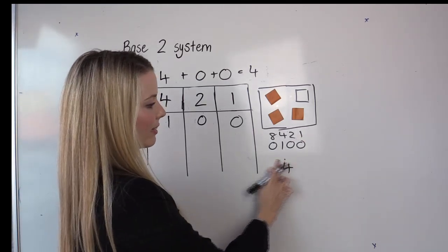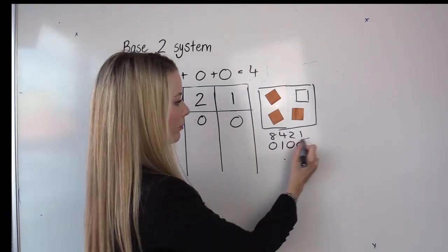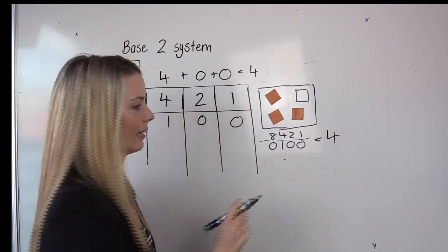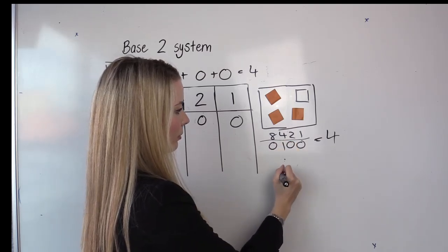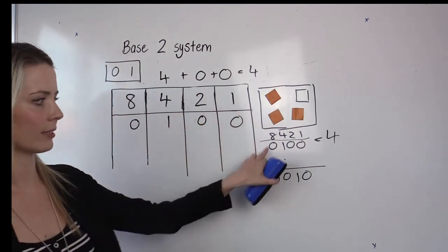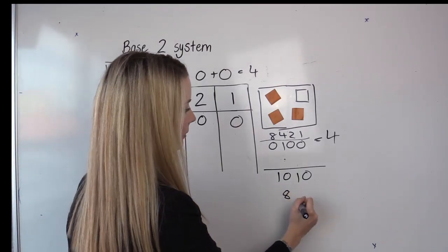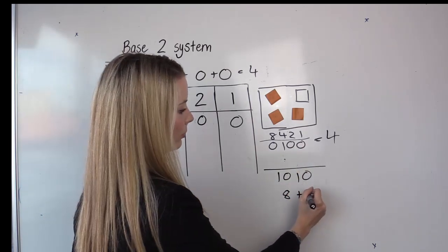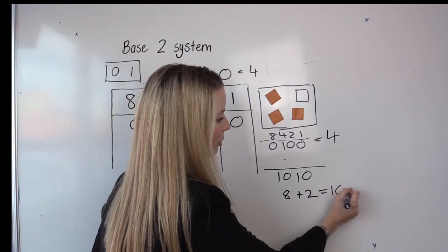And you start to remember when you see these numbers you start to recognize that if there's a one in the fours column then that means four. If someone's given me a number let's say one or one or what's that telling me? It's telling me that I've got one in the eights column so eight plus one in the twos column which is two and there's nothing else there so we've got ten.